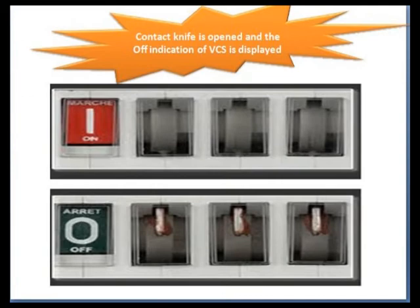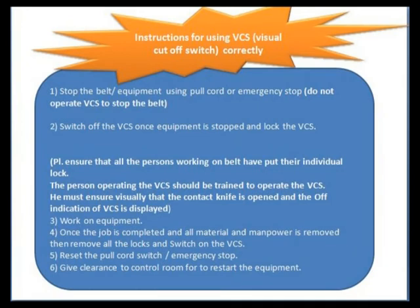Here are the operating instructions for VCS. Always first stop the equipment using an emergency button or pull cord — never operate VCS directly without stopping the equipment first. Apply the emergency stop, then switch off the VCS. Once the equipment is in a stopped condition, ensure that all persons working on the belt have applied their individual locks. The person operating the VCS must be trained to do so.